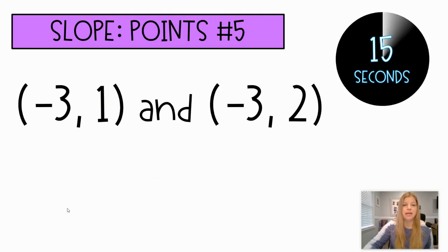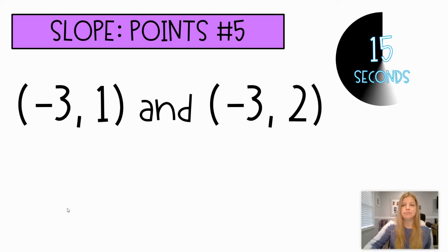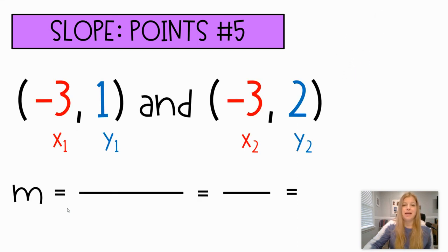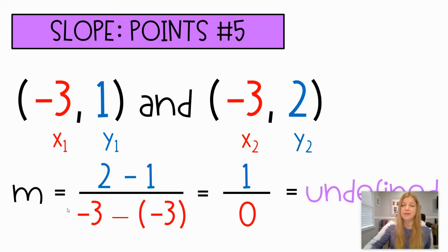Last one. Negative 3, 1, and negative 3, 2. This is going to be that other special case. You should notice the x's are the same. And if I go ahead and I substitute that in, 2 minus 1 over 3 minus negative 3. So 2 minus 1 is just 1. 3 minus a negative 3 really means negative 3 plus 3, which is 0. And we know we cannot divide by 0, and that is simply undefined.